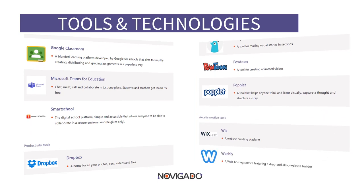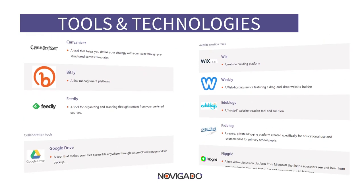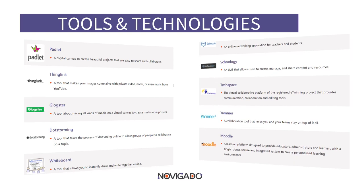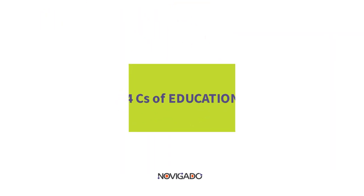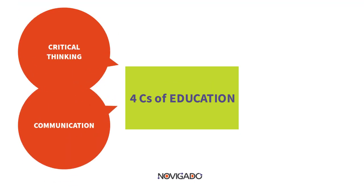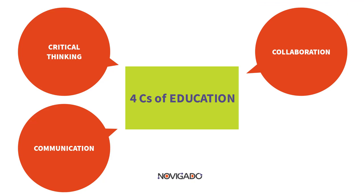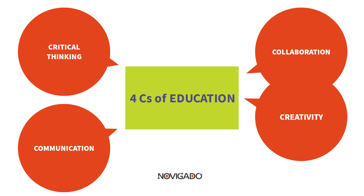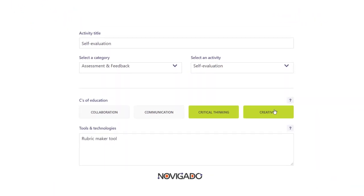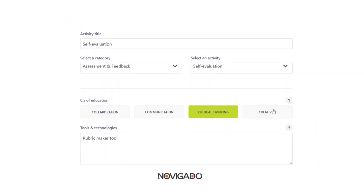Moreover, the Novigado tool provides ready-made activities you can select and adapt for each of the categories, as well as suggestions about the tools and technologies you could use. The activities you design may support one or more of the so-called four C's of education: critical thinking, communication, collaboration, and creativity. In this tool, you can tag each of your activities with one or more of the four C's.